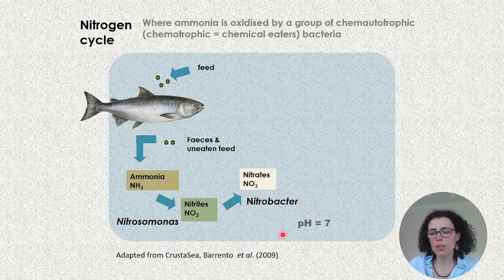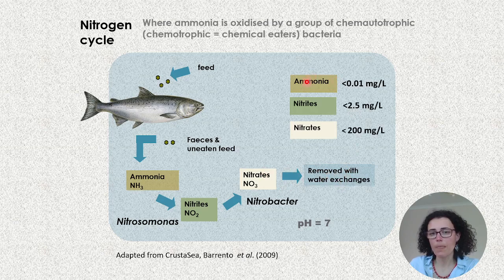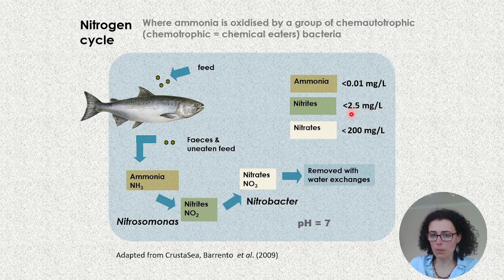For the biofilter and its bacteria to operate at their best, the pH should be a minimum of 7. If nitrates increase above a certain level, you just remove them by doing water exchanges. Ammonia is toxic and needs to be kept as low as 0.01 mg per liter. Nitrites are less toxic but still need to be kept below 2.5 mg per liter. Nitrates are way less toxic — you can be more relaxed, as they can be below 200 mg per liter.